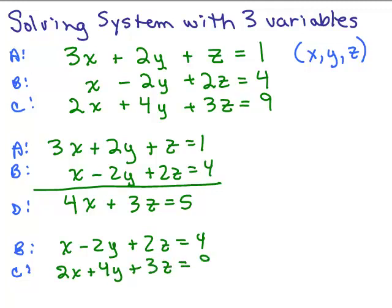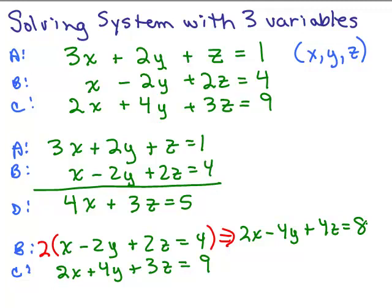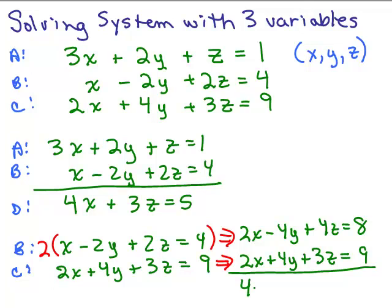It won't work to just add these two equations because Y won't be eliminated — I'd get a 2Y. So I need to alter it. If I multiply the top equation by 2, I'll have a negative 4Y, and that will cancel. Multiplying through: 2X minus 4Y plus 4Z equals 8. Adding the bottom equation 2X plus 4Y plus 3Z equals 9, I get 4X plus 7Z equals 17.